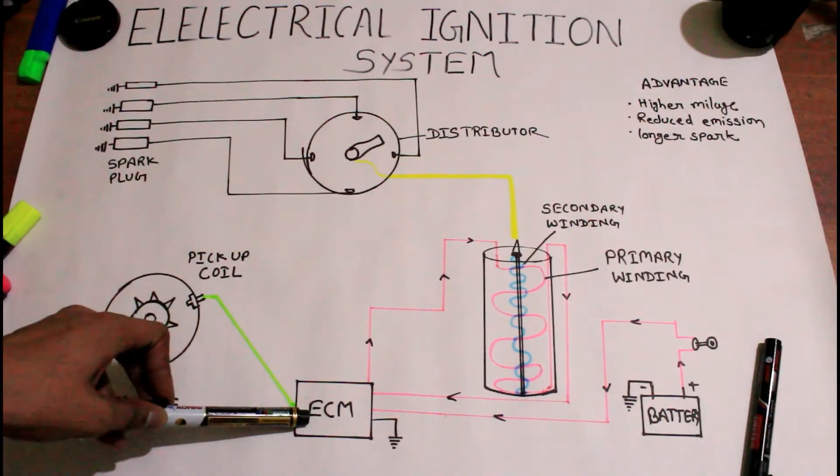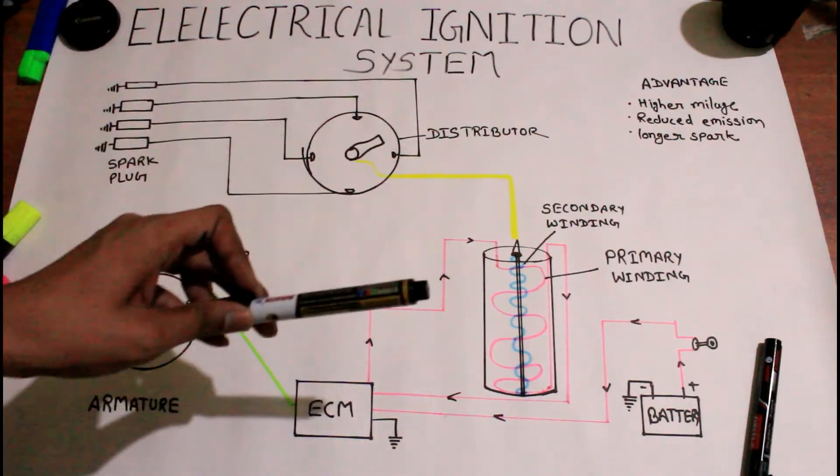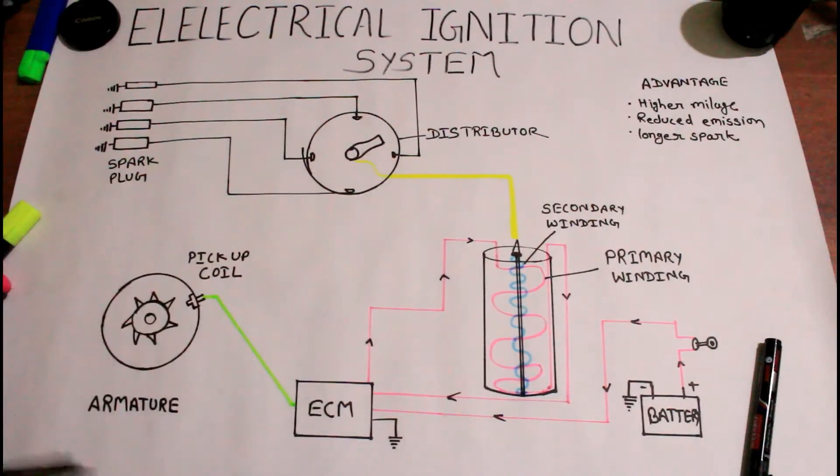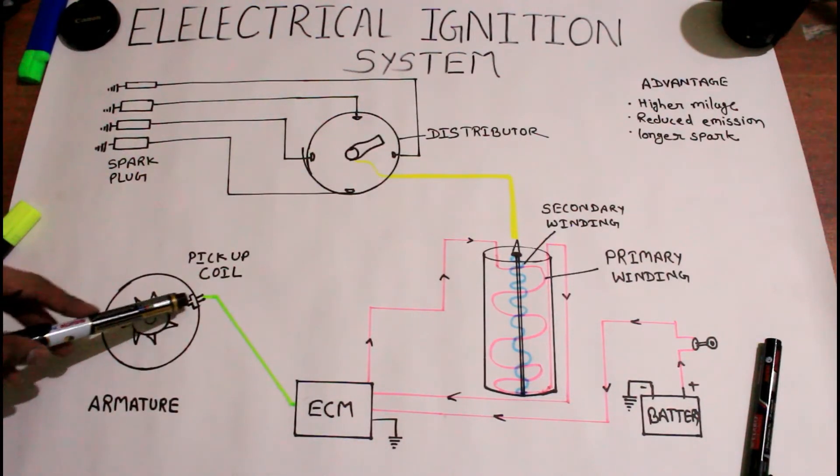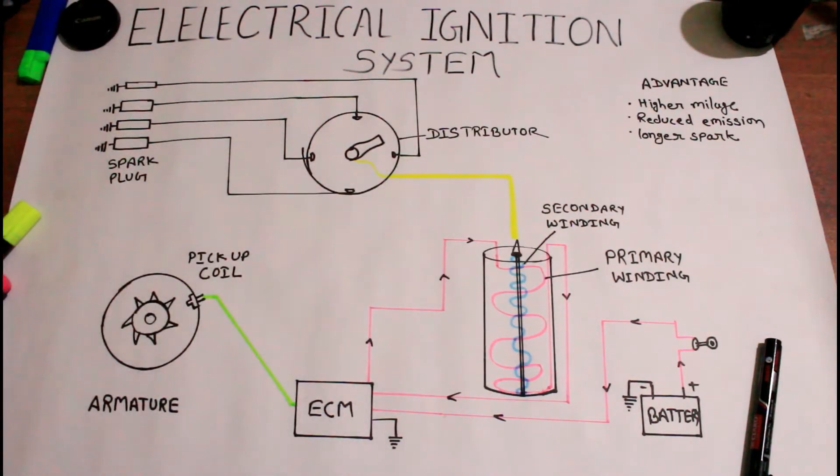This electronic control module, after sensing this electrical signal, turns off the current flowing in the primary winding. And again, after the teeth pass away from the pickup coil, the current flow in the primary winding turns on again.